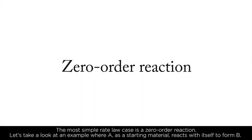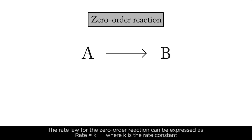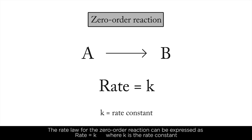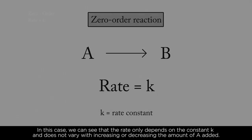The most simple rate law case is a zero-order reaction. Let's take a look at an example where A, as a starting material, reacts with itself to form B. The rate law for the zero-order reaction can be expressed as rate equals K, where K is the rate constant. In this case, we can see that the rate only depends on the constant K and does not vary with increasing or decreasing the amount of A added.